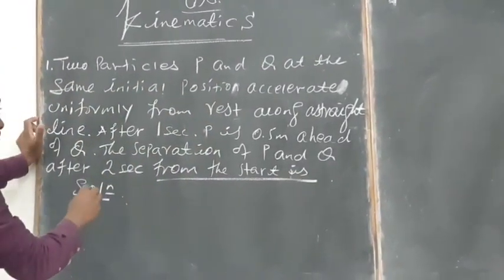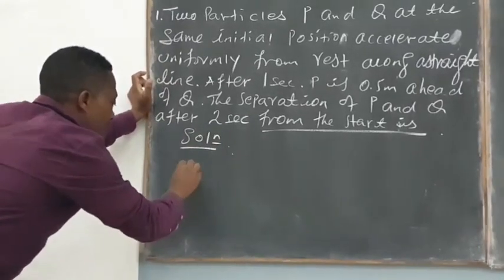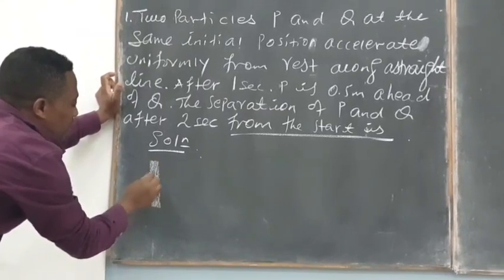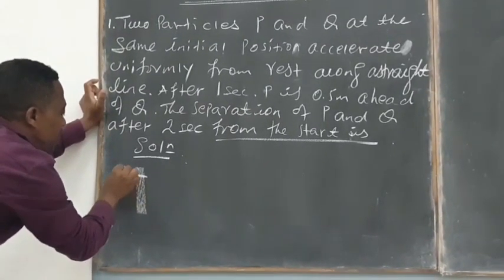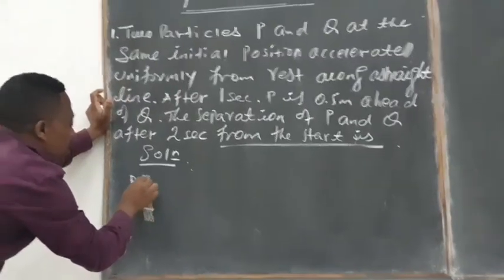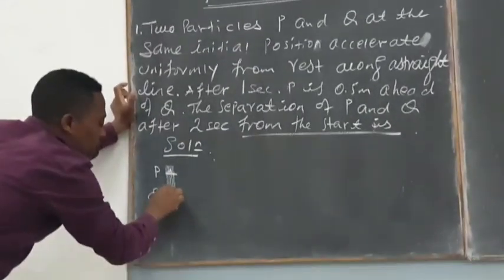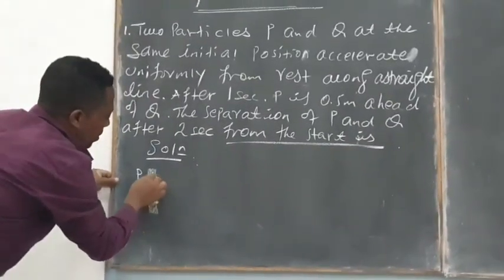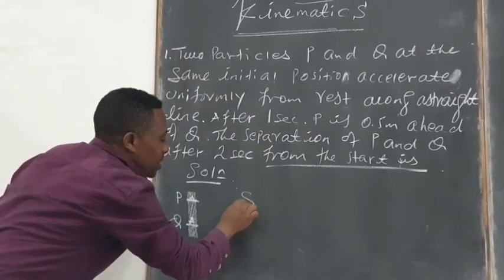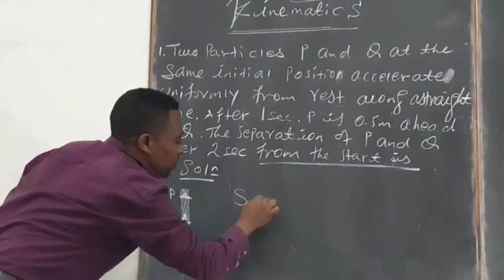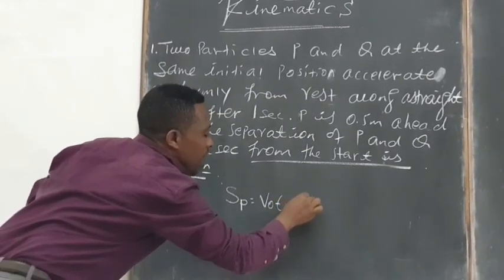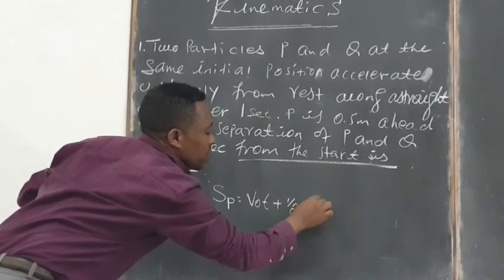Look my dears. Now let this be the initial position. This is position P and then this is position Q. Let this be position A as well. Anyhow, look, we know that the distance of P is equal to initial velocity times time plus half A P t squared.